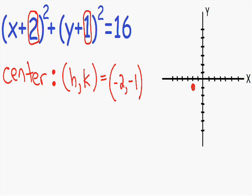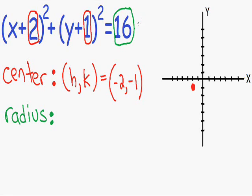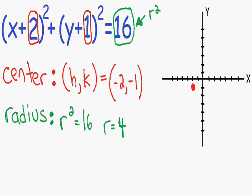Now that we have the center, we need to plot points on the edge of the circle, and for that we need the radius. The number on the right side of the equation is our r squared, so 16 is r squared. That means r squared equals 16, and taking the square root gives us r equals 4. So the distance from the center to any point on the edge is 4.